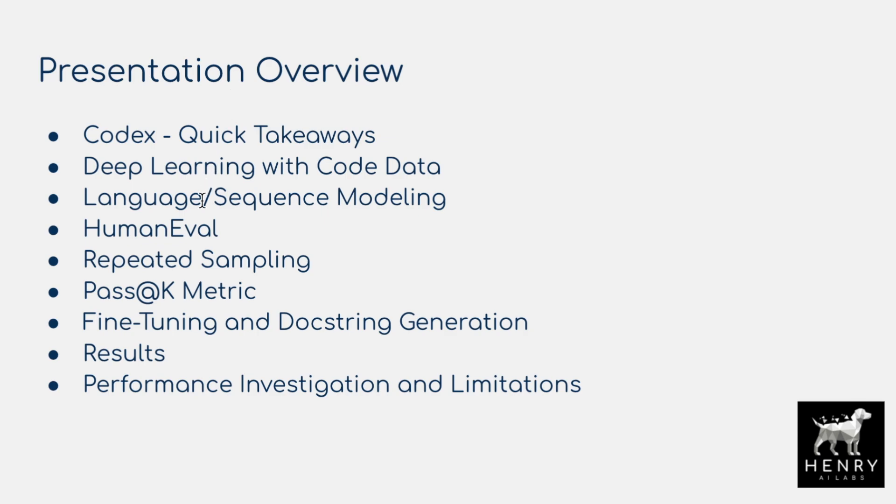We'll also backtrack a little, talking about language and sequence modeling — extending language modeling datasets from Wikipedia, books, or web scrapes into other domains like code. We've seen it adapted to images or amino acids, all these different ideas of extending this sequence modeling approach into other data domains.